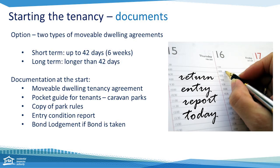Once you are starting a tenancy, there are two options: a short-term tenancy or a long-term tenancy, and you and the tenant decide which one you're entering into. For a short-term agreement, a written agreement isn't required but is recommended. There's no formal one through the RTA, but you must give the tenant a copy of the park rules and a copy of the pocket guide for tenants in caravan parks.